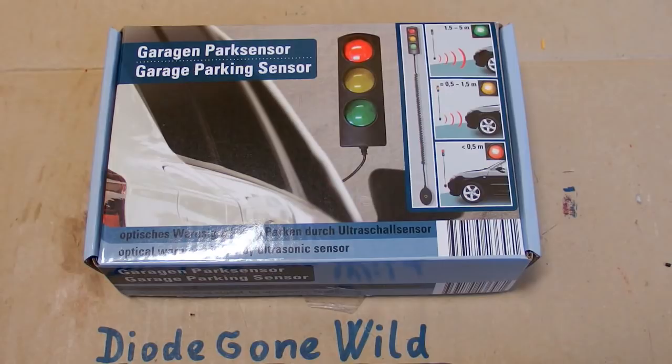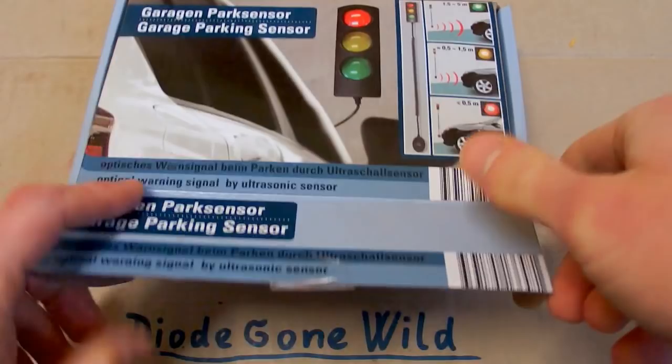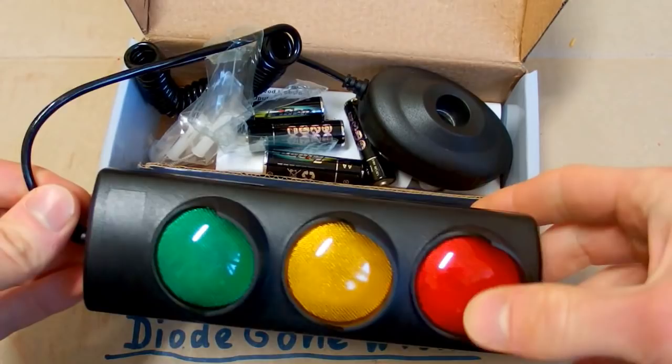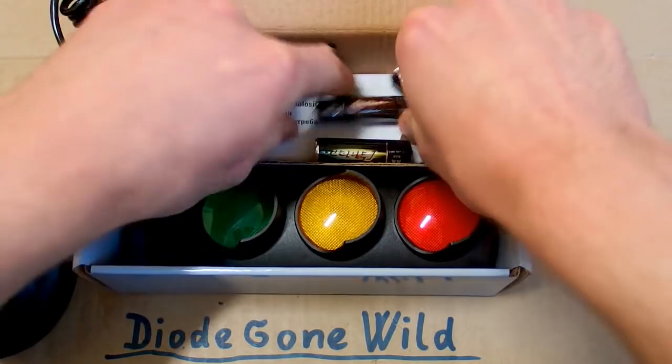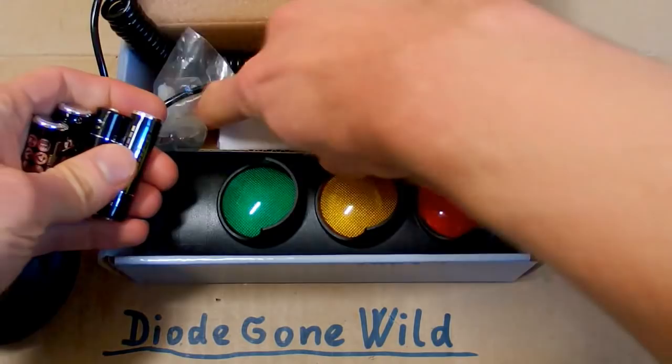So let's unbox it. And there is the traffic light, it looks very nice, almost like a real traffic light. There is the sensor, probably an ultrasonic sensor and some batteries for it, four double A batteries, some manual which nobody reads, and some screws to install it.